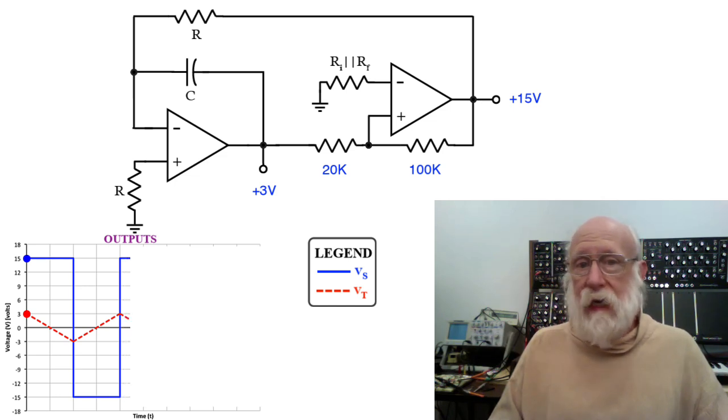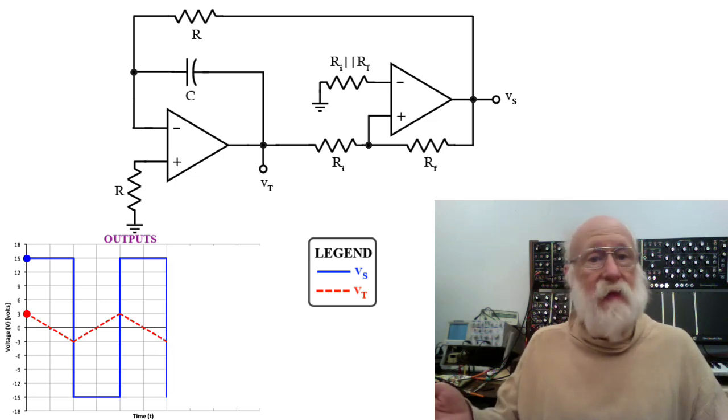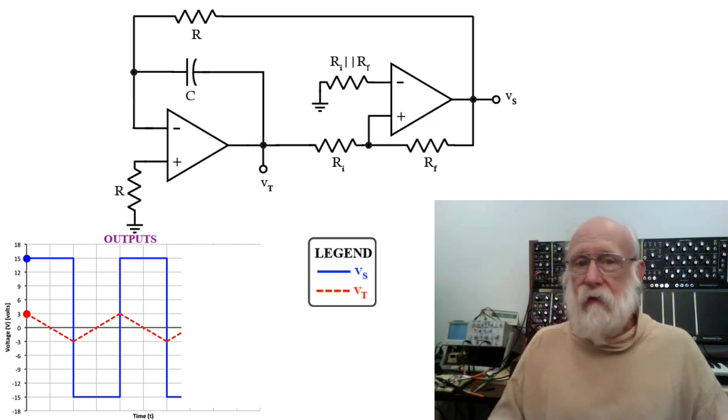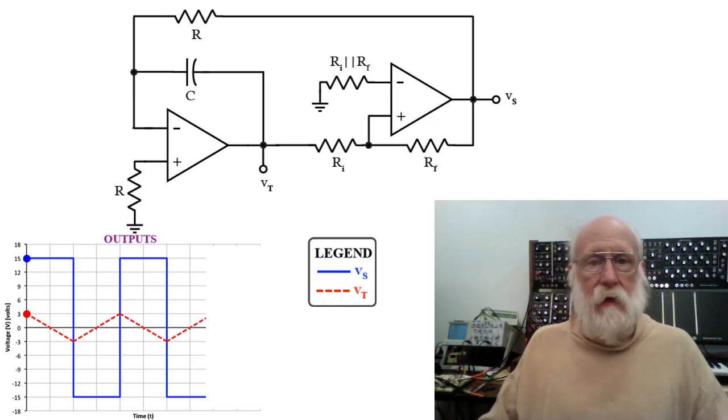So what you get out of this is you get a triangle wave at the output of the integrator, because it goes down at a constant rate, then it goes back up at the same constant rate, just in the opposite direction. And at the same time that's going on, the output of the Schmidt trigger goes from high to low to high to low.